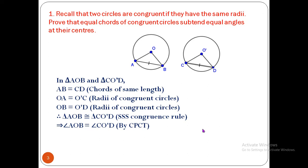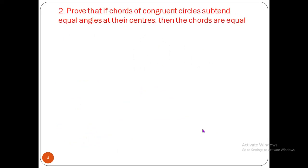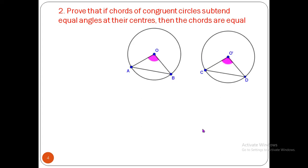Question 2: Prove that if chords of congruent circles subtend equal angles at their centers, the chords are equal. This is the converse of Question 1, using Theorem 2. Given: two circles with centers O and O′ that are congruent, and the angles at the centers are equal. We must prove AB = CD.